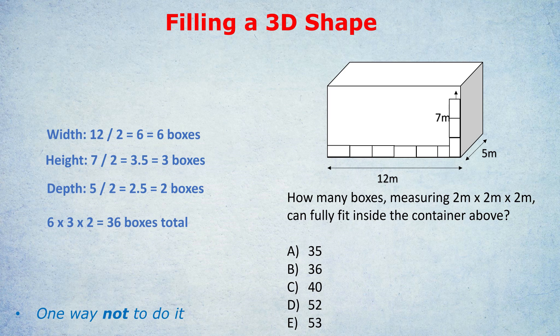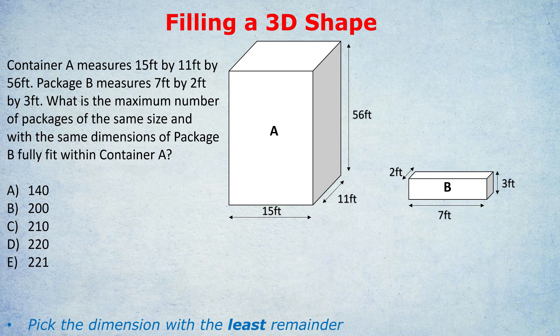Notice it's much smaller than the 52 that some people might have thought we could fit. Now, I'm going to be honest with you. The questions aren't always this straightforward. Sometimes they are, but sometimes they're not. How can they make it harder? They can make it harder by having dimensions where you have to choose which dimension to use. Take this next question. Container A measures 15 foot by 11 foot by 56 foot. Package B measures 7 foot by 2 foot by 3 foot, as you can see.